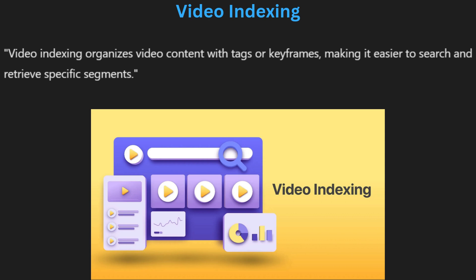Video indexing is the process of organizing and tagging video content with relevant keywords, metadata or keyframes to make it easily searchable. This process allows users to quickly navigate through vast amounts of video data. Indexing is commonly used in video streaming services, archives and educational platforms. By tagging scenes or frames with descriptive labels, users can search for specific topics or events within a video. Video indexing significantly improves the retrieval process, making it easier to find relevant video content quickly.